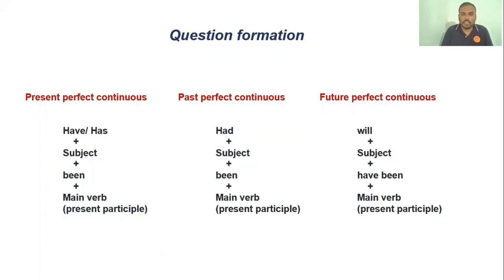Example for present perfect continuous: 'Has she been working?' For past perfect continuous, we use the auxiliary 'had' first, then the subject, then 'been,' then the main verb. Example: 'Had she been working?' For future perfect continuous, the special difference is that we use 'will' first instead of the subject, then the subject, then 'have been' for both singular and plural, and finally the main verb. Example: 'Will she have been working?'